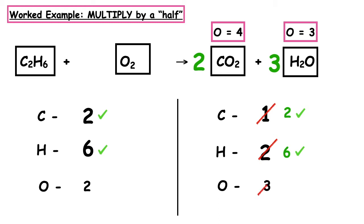Now we count the total oxygens on the product side: four in the carbon dioxide plus three in the water equals seven. How many oxygens on the left? Two. On the right? Seven. They don't balance. What do we do to two to get to seven? We multiply by 3.5, so we put 3.5 in front of the O₂. Three point five times two equals seven — they balance, so we tick them off.